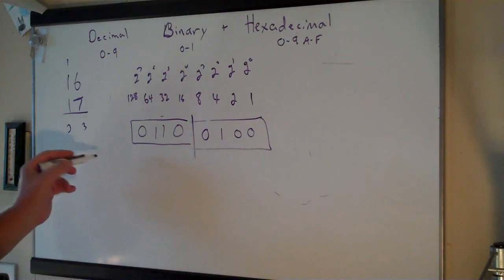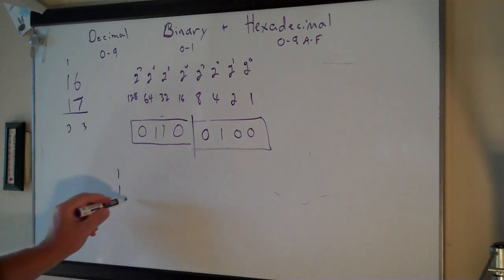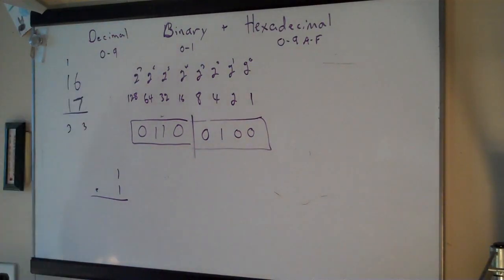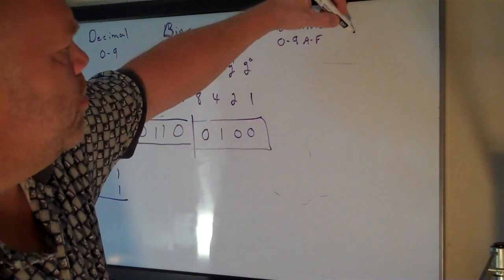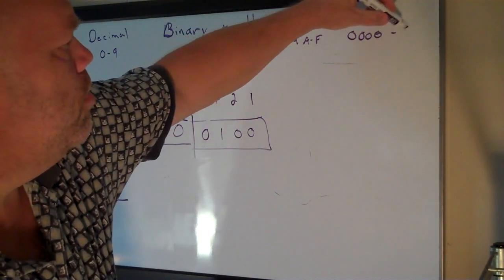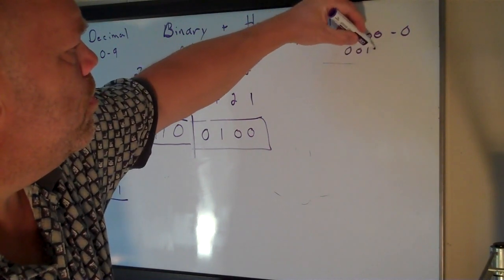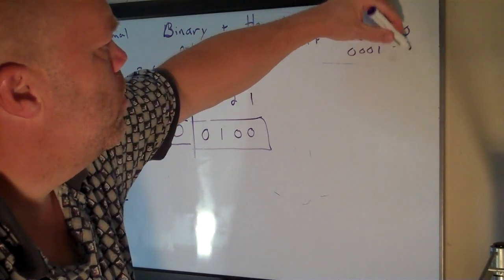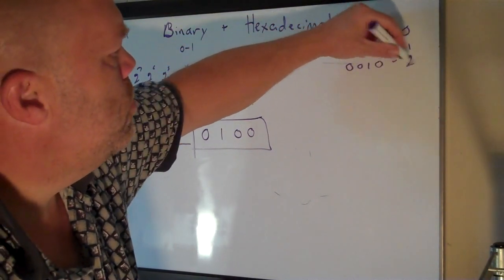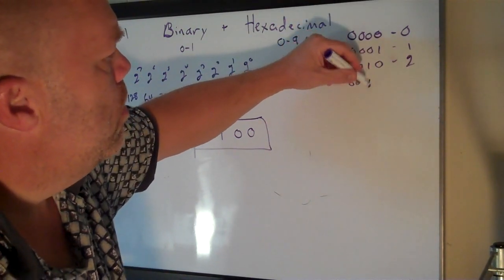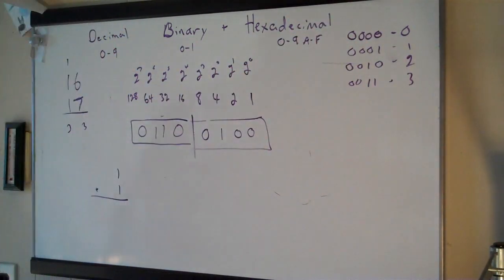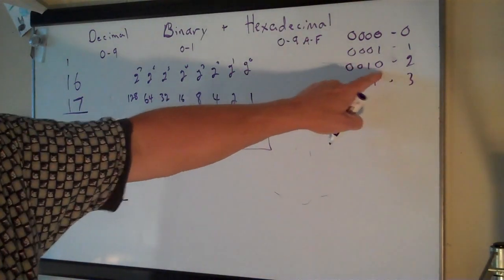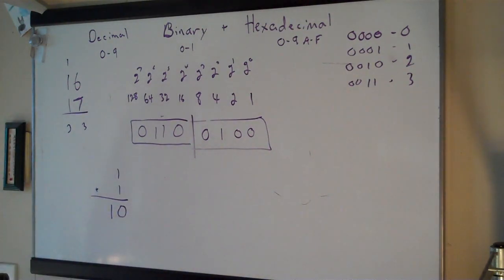If you add 1 plus 1 in binary, you get 2. But there is no 2 in binary — there's only 0 and 1. Looking at the table: 0010 is 2, 0011 is 3. So 1 plus 1 equals 2, and since we don't have a 2, we write it as 10. So 1 plus 1 equals 10 in binary. You carry the 1 if you have other digits.